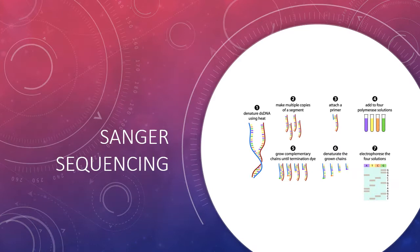Here we have a very simple illustration of the Sanger sequencing method. So, the first step, heat is used to denature your DNA, and then multiple copies of a segment are made, and then a primer is attached.